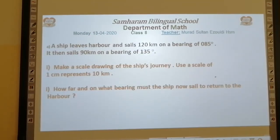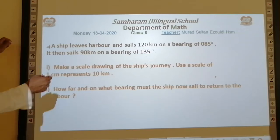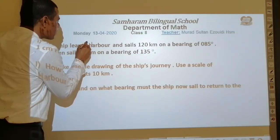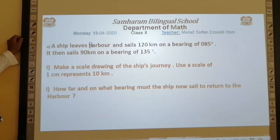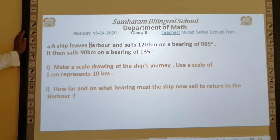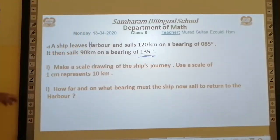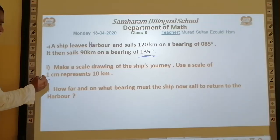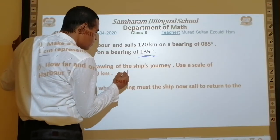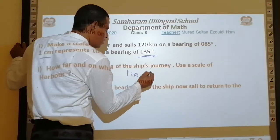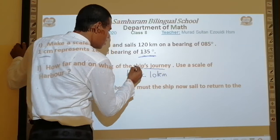Here we have a shape: Levis Harbour. A ship sails 120 kilometers on a bearing of 85 degrees. It then sails 90 kilometers on a bearing of 135 degrees. We will make a scale drawing of the ship's journey using a scale of 1 centimeter represents 10 kilometers.